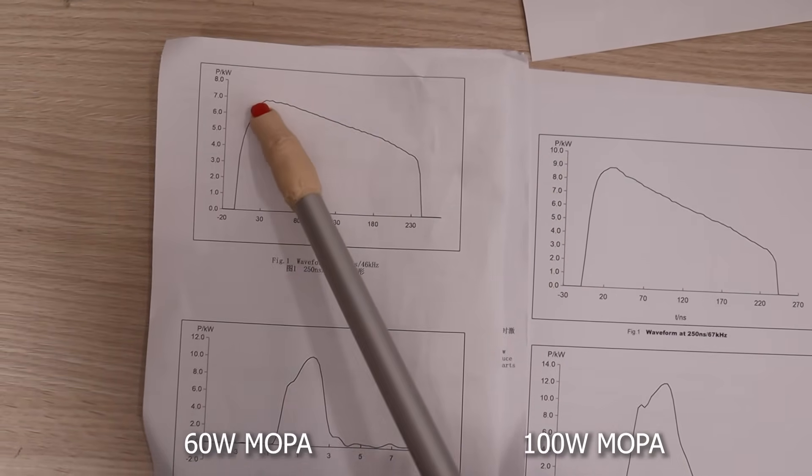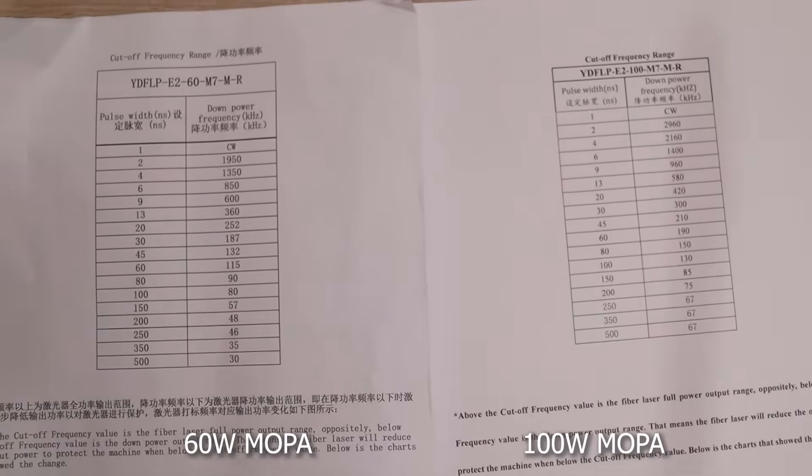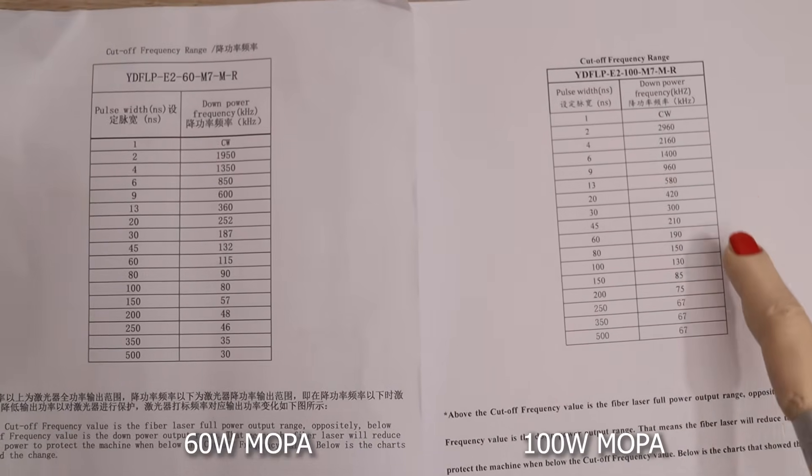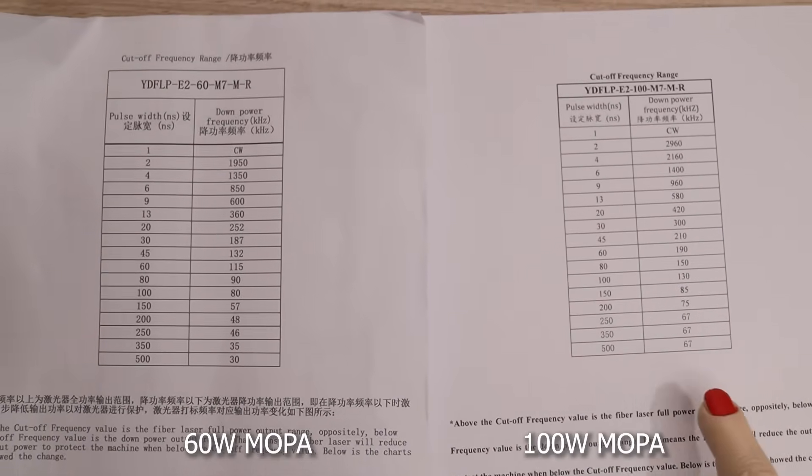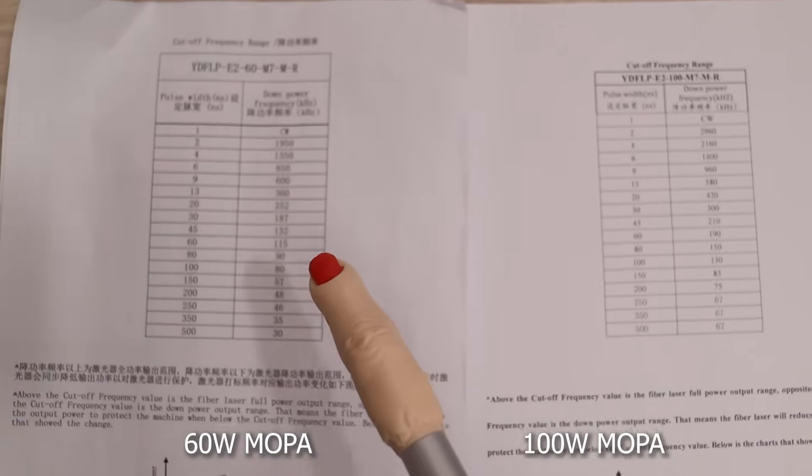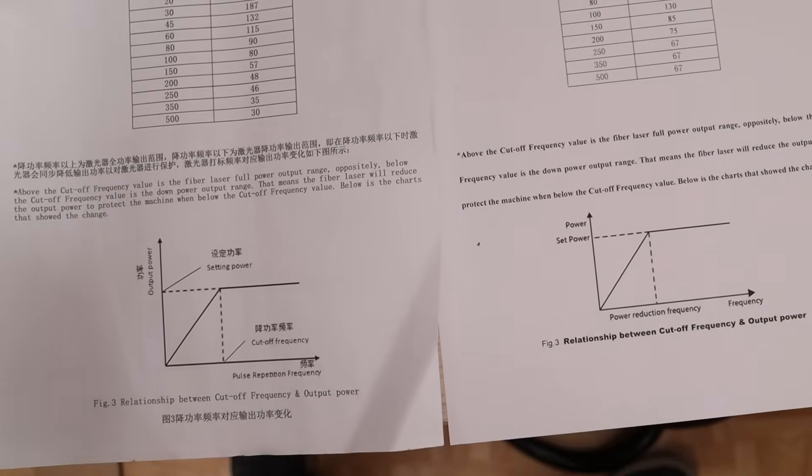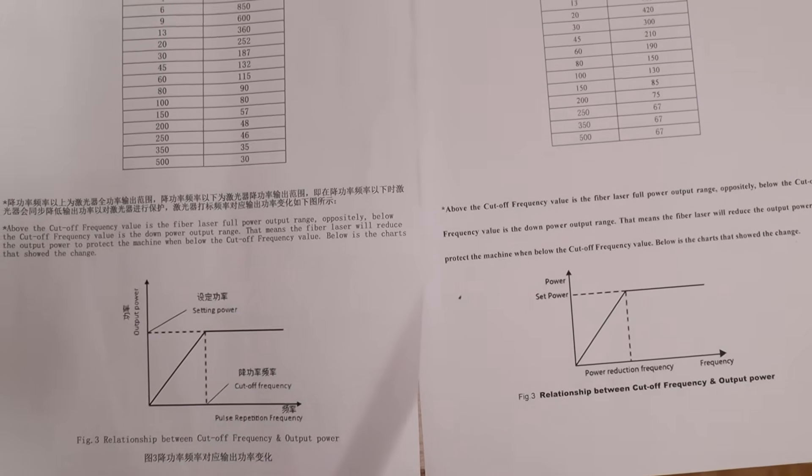Looking at the pulse waveform, we can see that it achieves greater pulse power, which is expected. The key difference is the cutoff frequency range. The 100-watt version has a much higher cutoff frequency for each pulse width value. To maximize optical power output, you must use a frequency at or above the cutoff frequency for the selected pulse width.